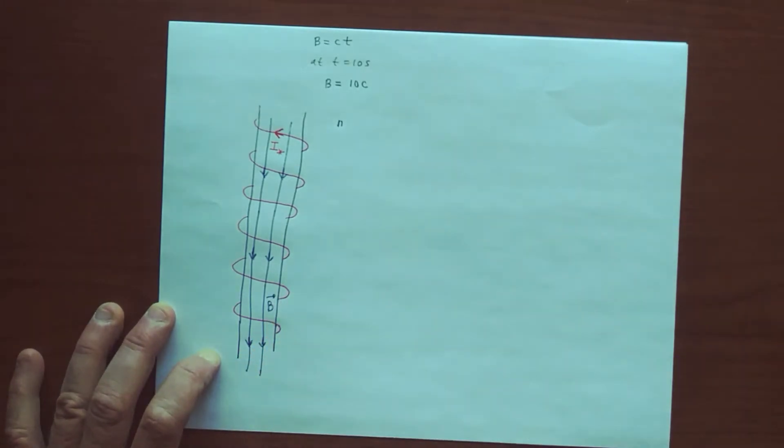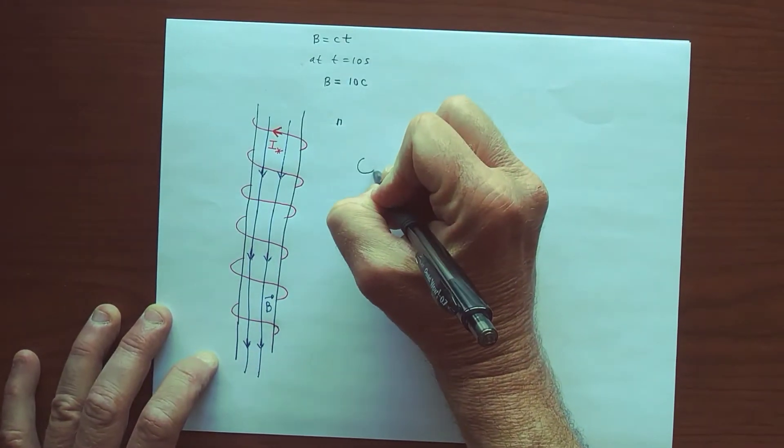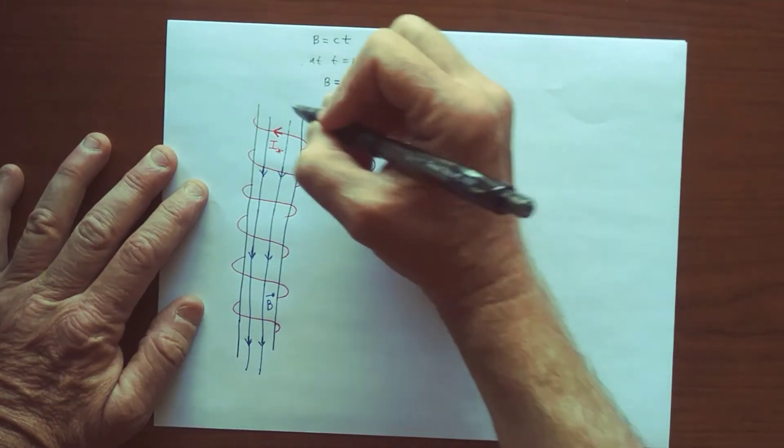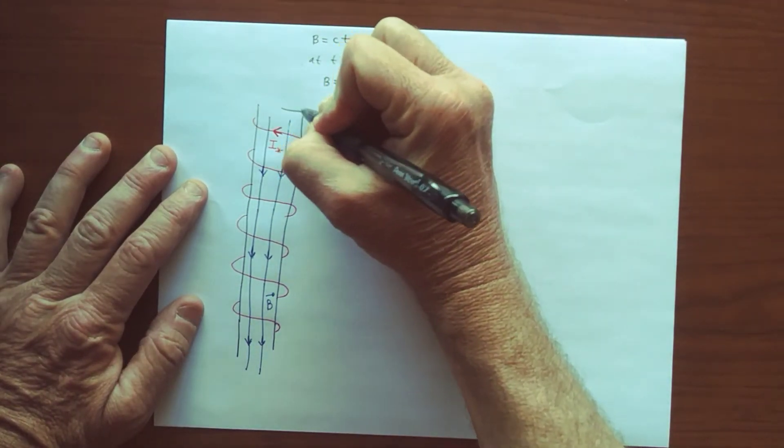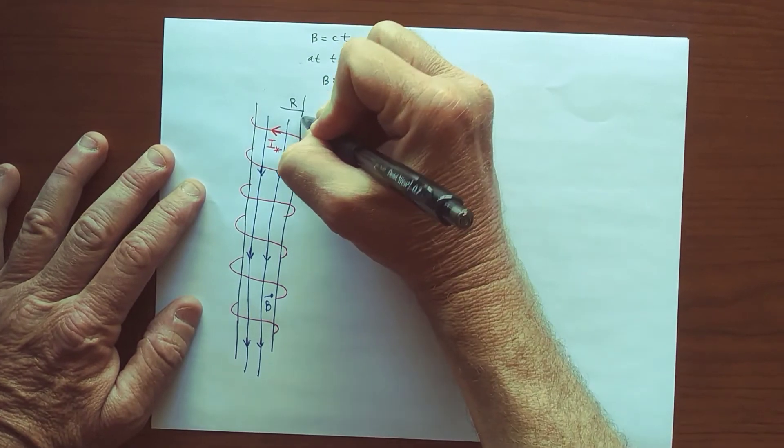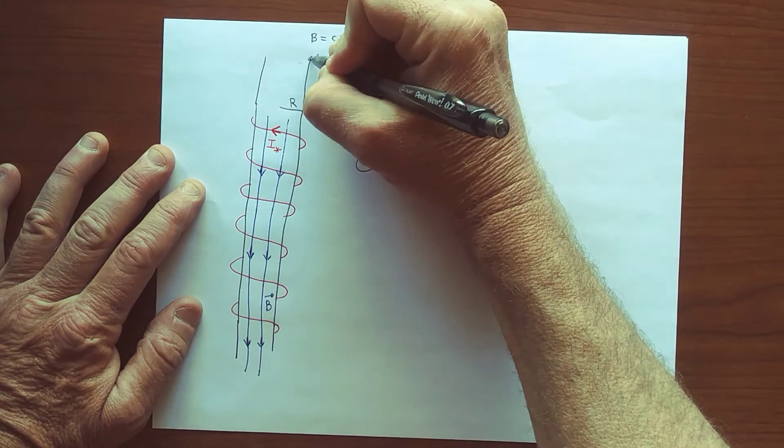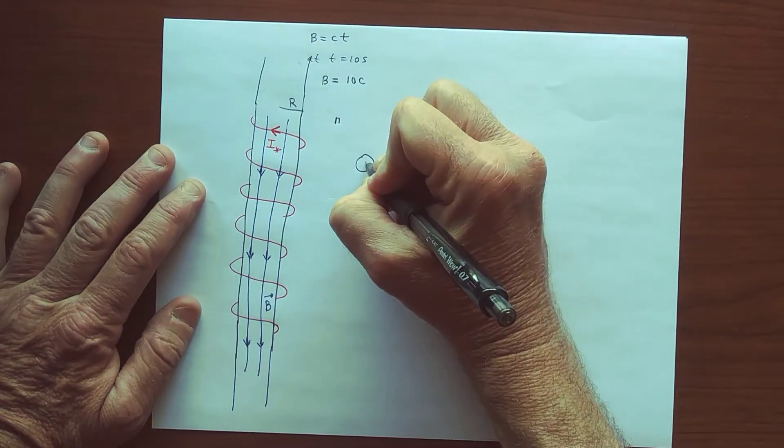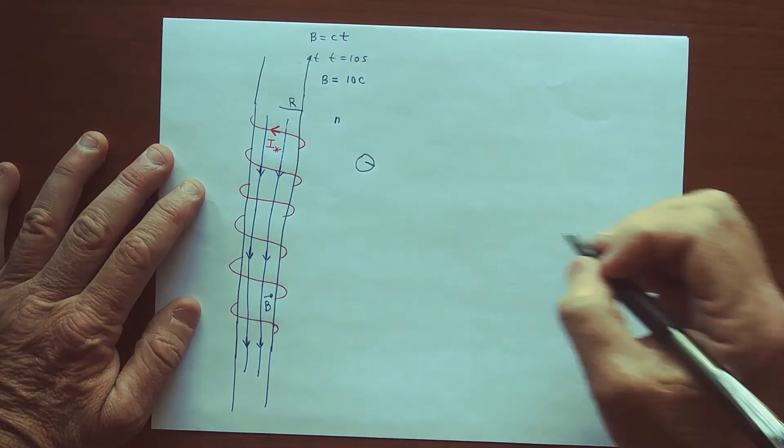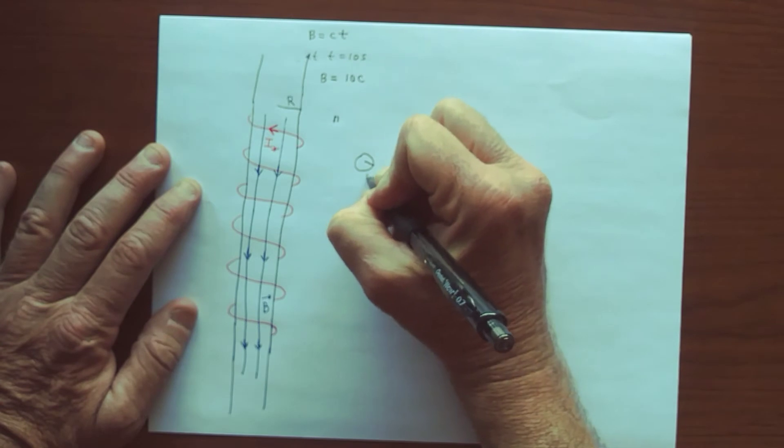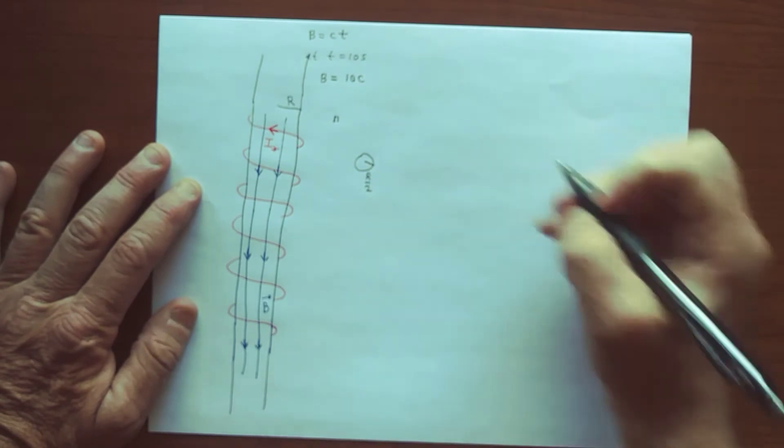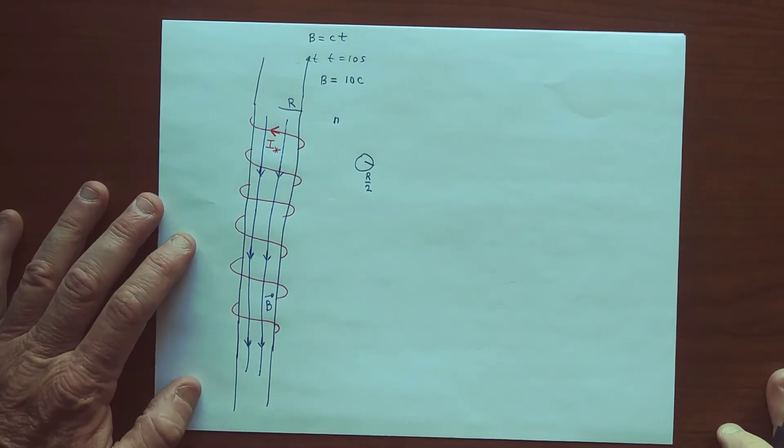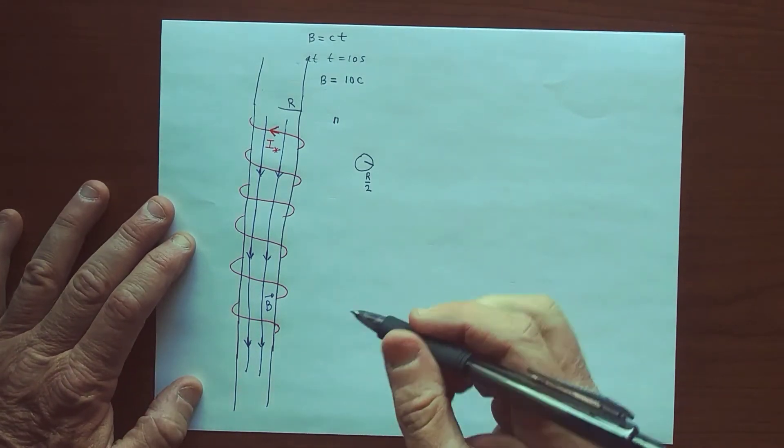And now let's say that we take a circular coil. First of all, let's say that the radius here is capital R, the radius of the solenoid of the tube, capital R. And the radius of a little circular coil is r over 2. So clearly this thing fits inside the solenoid.